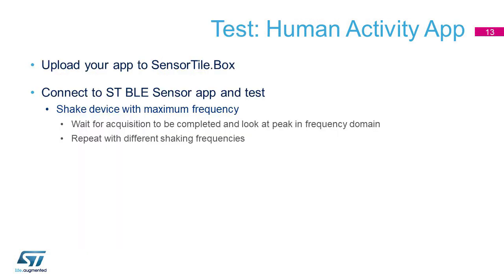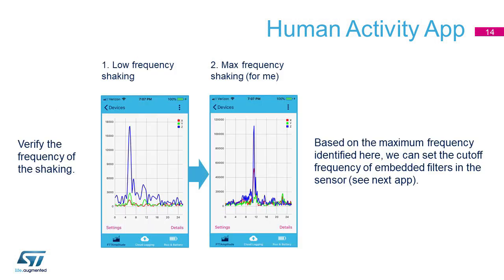Let's take for granted that you are able to upload the app to SensorTile.Box. If not, we suggest you have a look at Video Number 1. Let's connect to the box and shake it in different modes to see the frequencies of our movements. Depending on how fast you shake your hand, you will get different peaks in the graph. The different colors refer to the three axes of the accelerometer.